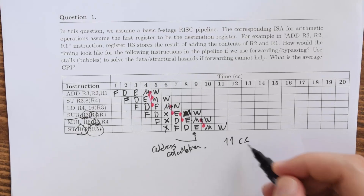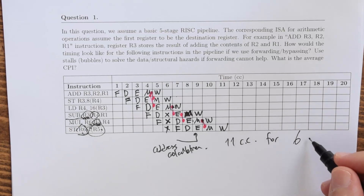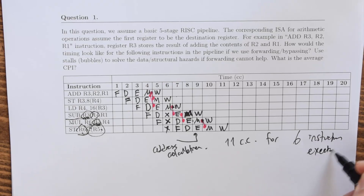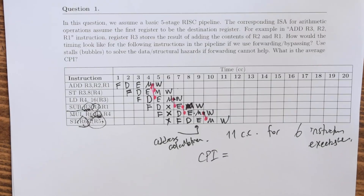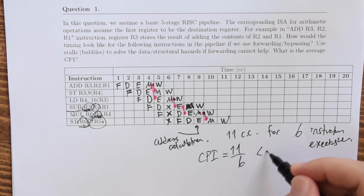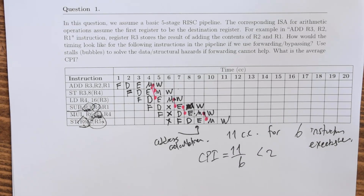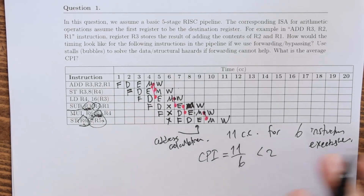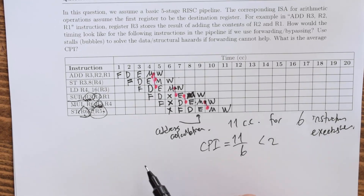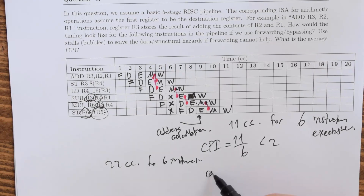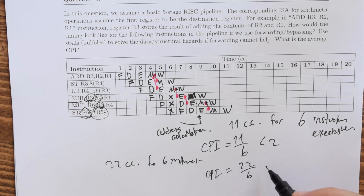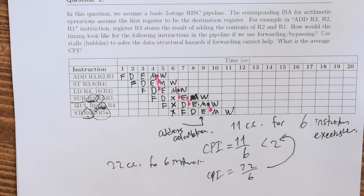We lost one clock cycle due to the stall, so we used eleven clock cycles for six instructions. Therefore, our CPI is eleven divided by six, which is slightly less than two. Without bypassing and forwarding, it would take twenty-two clock cycles for the same six instructions, giving a CPI of twenty-two over six — exactly double the CPI achieved with forwarding.